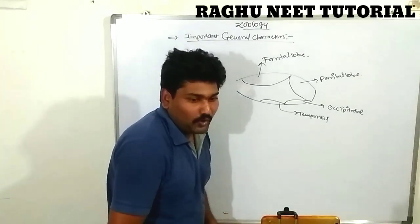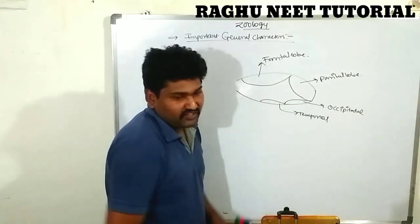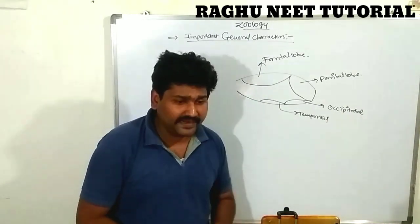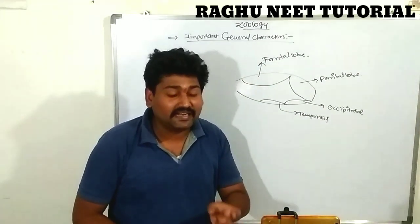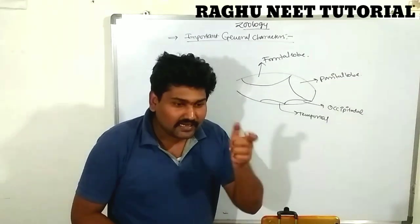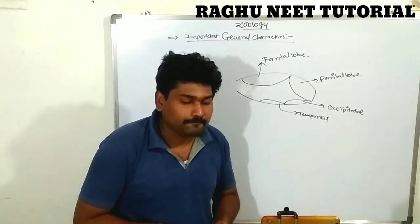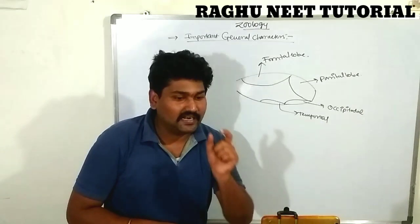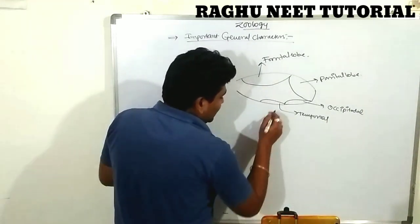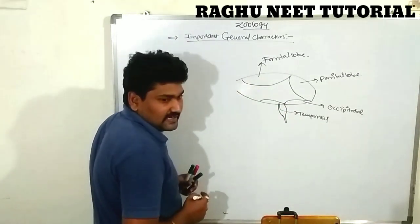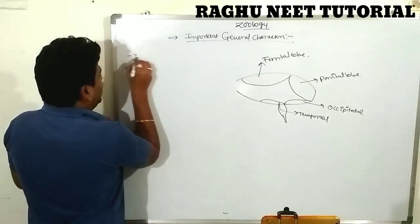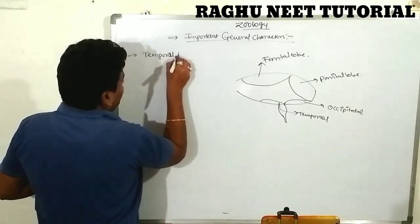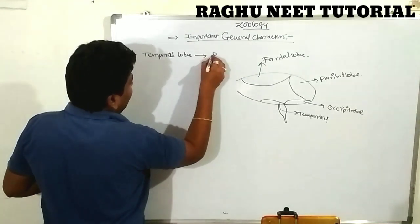The temporal opening is one of the special characters of vertebrates. It is located behind the cranium and is an opening through which the brain extends. The extension of the brain through this opening is called the spinal cord. The temporal bone is present in the cranium of reptiles.